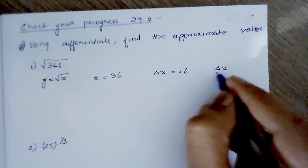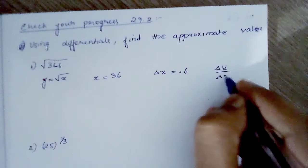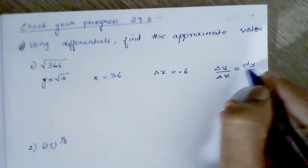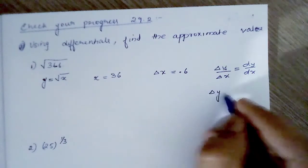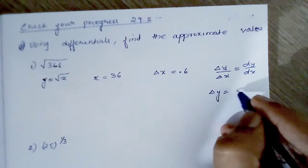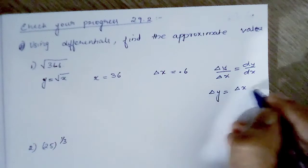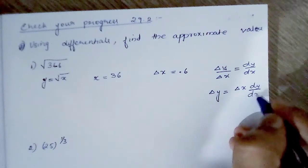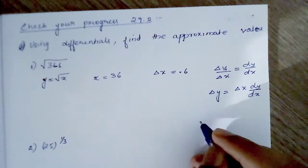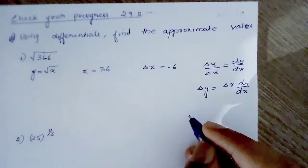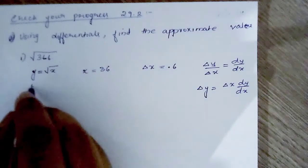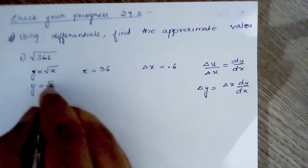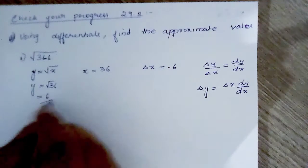Delta y divided by delta x equals dy by dx, so delta y is equal to delta x times dy by dx. Here y is equal to root x, so y is equal to root 36 which is equal to 6.